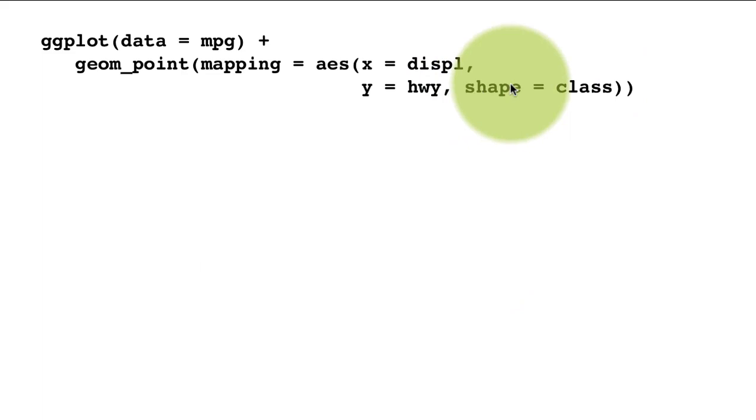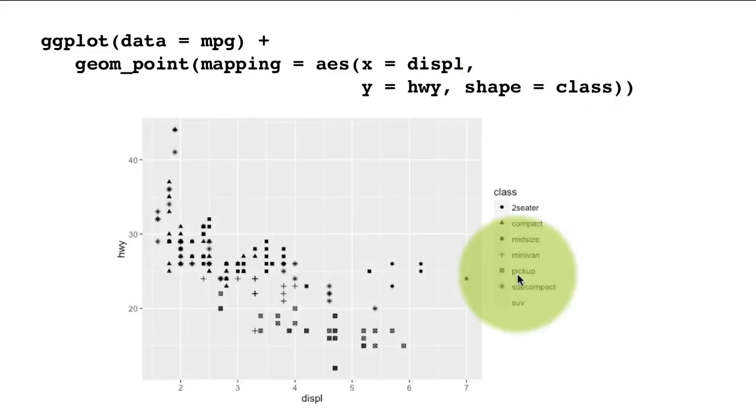You can also use other things in this. So for example, here I've said shape equals class. Instead of color equals class, we said shape equals class. So what's going to happen is that the shape of a point is going to be determined by class. That is all the cars of the same class will have the same shape and cars of a different class will have different shapes.